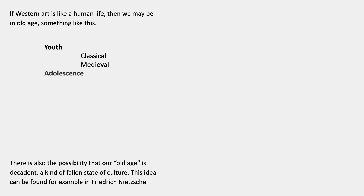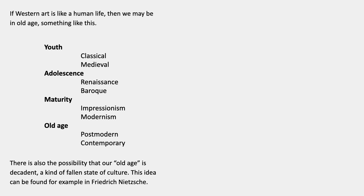So if Western art is like a human life, then we may be in old age. Under the mega-period of youth you'd say there's classical and medieval; then would come adolescence of Western art — Renaissance, Baroque — then maturity, maybe Impressionism and modernism; and then old age, which would have to be postmodern and contemporary art. That raises the possibility that we're in a kind of decadent period — not a new idea; you can find it in the 19th-century philosopher Friedrich Nietzsche. If you think the life cycle model has some value, you might want to consider how you'd arrange it in relation to Western art or art of all cultures, and where you would locate yourself in it. It's also entirely possible to think of contemporary art as youth — the beginning of a new age — and then the question is, what comes next?